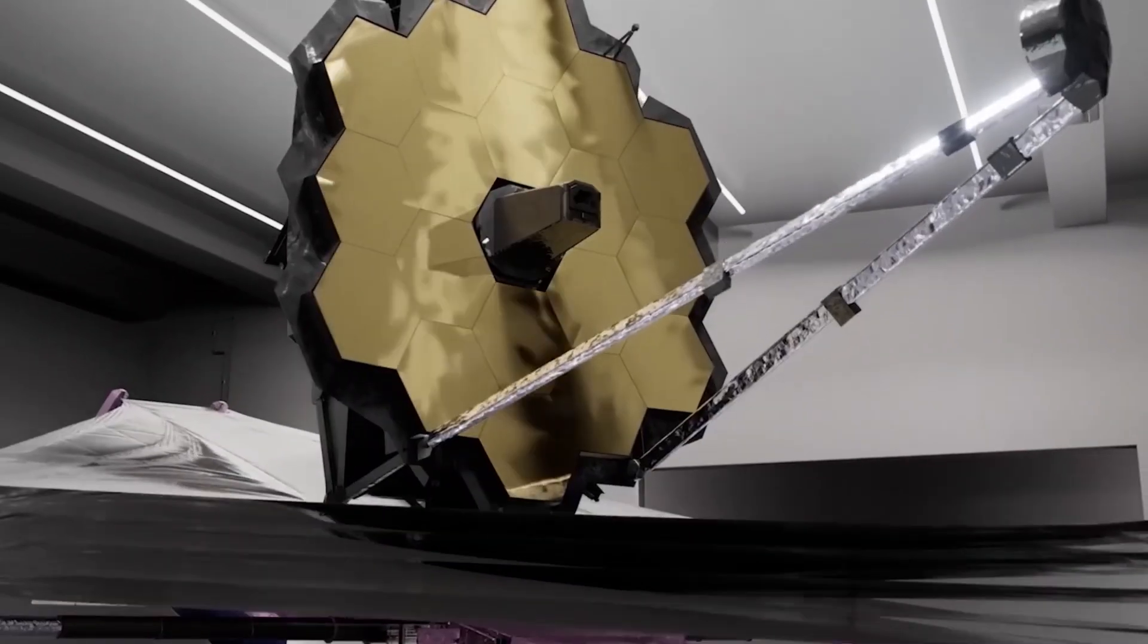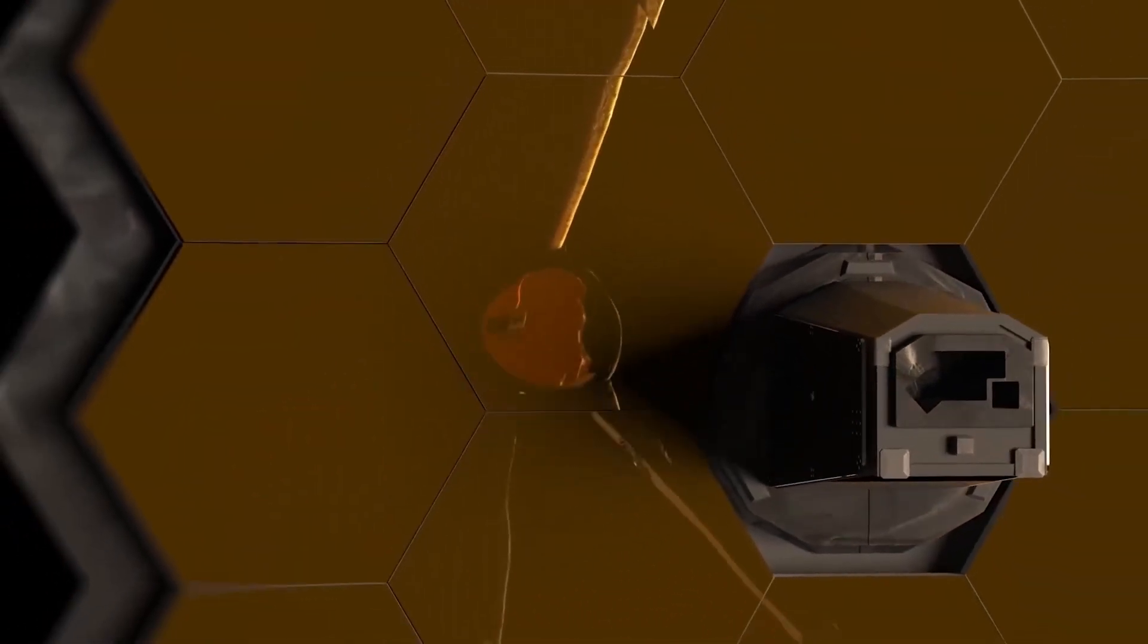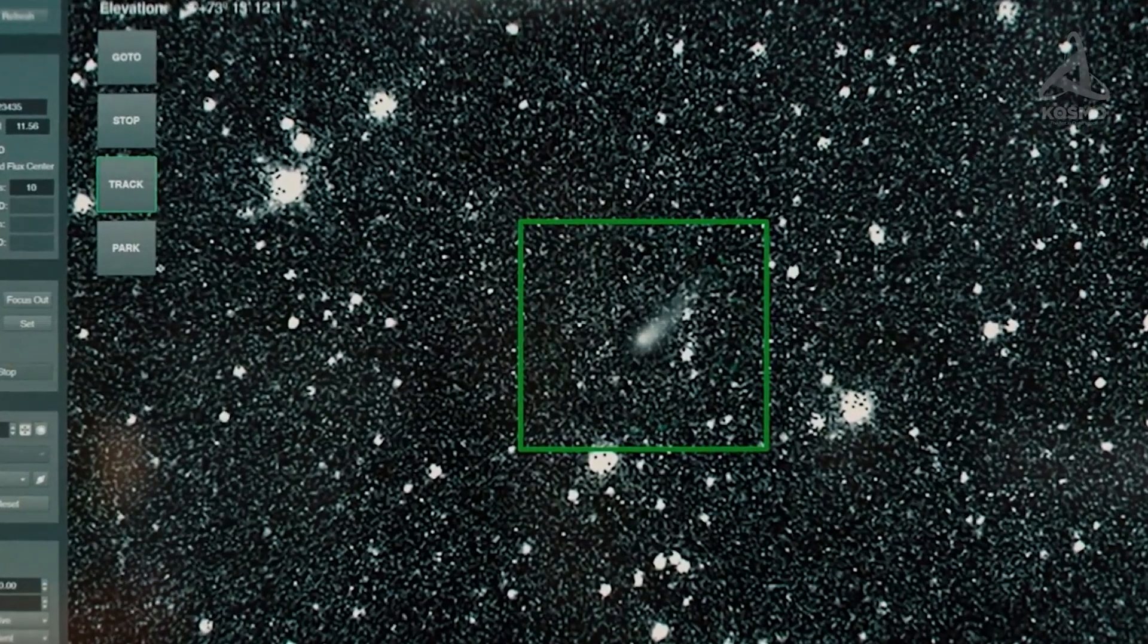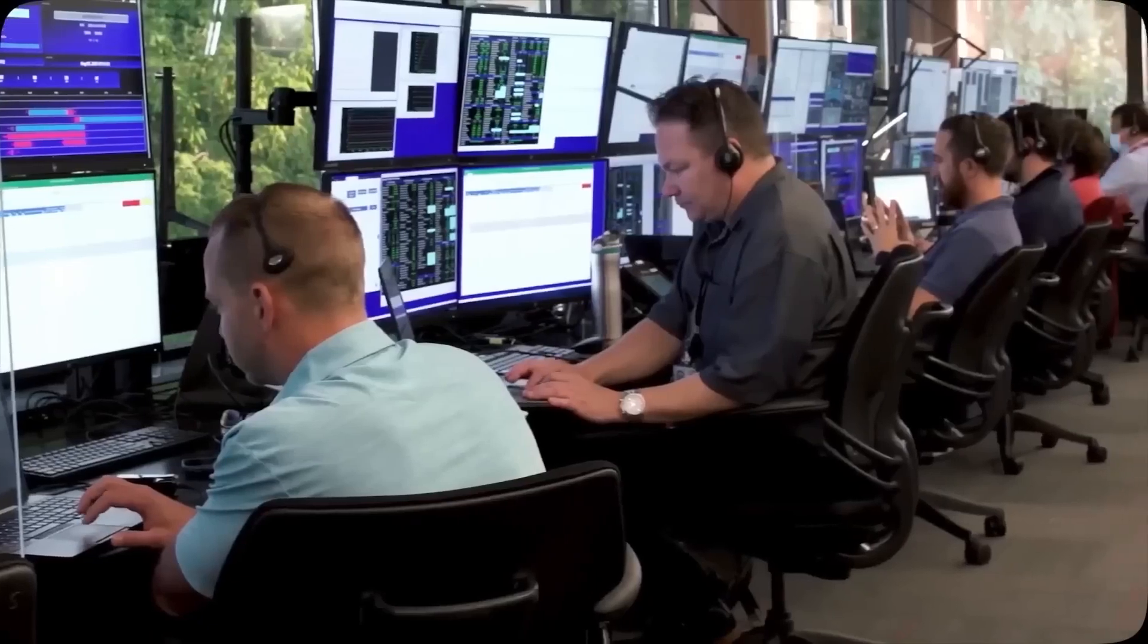Using the transit method, the James Webb will search for life on other worlds in the universe. The telescope's coronagraphs will take direct images of exoplanets near bright stars. An exoplanet will appear as a dot in the images.